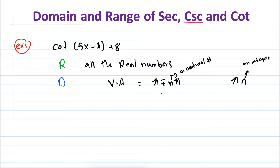Let's evaluate a couple of values for natural numbers. At π we have a vertical asymptote. At π plus 1π, at π plus 2π, at π minus 1π, and so forth. For πn: at n=0 we have 0, at n=1 we have π, at n=2 we have 2π, at n=-1 we have -π, and so forth. So these two expressions are the same thing — vertical asymptotes for cotangent are at π ± nπ (n natural) or at nπ (n integer).